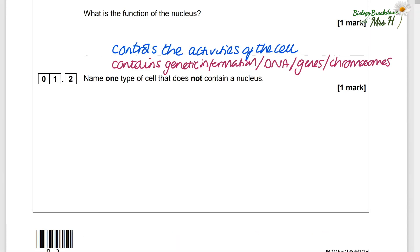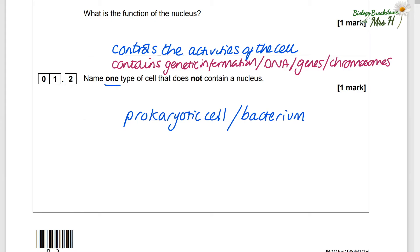Name one type of cell that does not contain a nucleus: a prokaryotic cell or a bacterium. Remember, just write one answer. A bacterium is a prokaryotic cell, so that is one answer, but another possible answer could be a red blood cell.